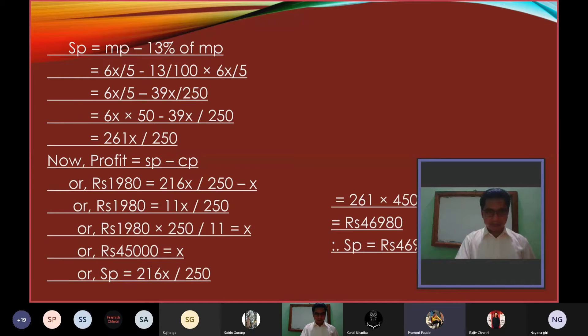SP is equal to MP minus 13% of MP, which equals 6x/5 minus 13/100 into 6x/5, equals 6x/5 minus 39x/250, equals 6x times 50 minus 39x over 250, equals 261x/250.